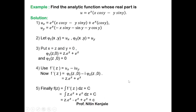I hope you understood how to find an analytic function f(z) = u + iv whenever its real part is given. On similar lines you can find the analytic function when its imaginary part v is given — in that case you need to choose the expression for f'(z) in terms of v_x and v_y, and the rest of the steps follow similarly.